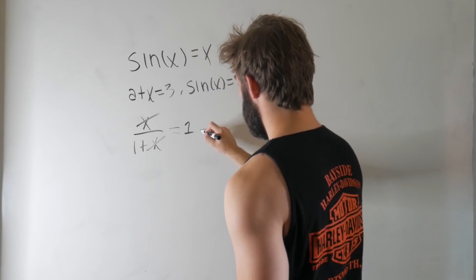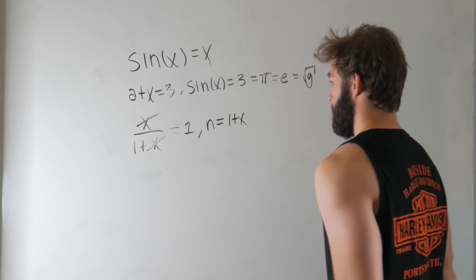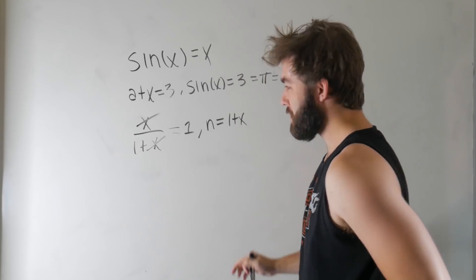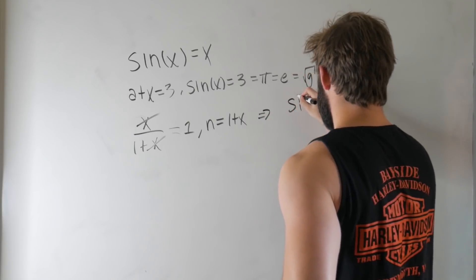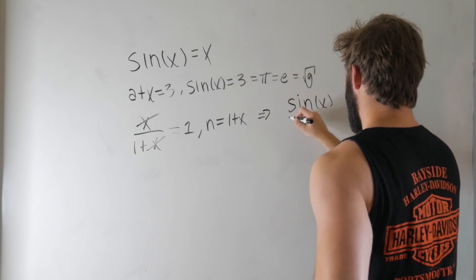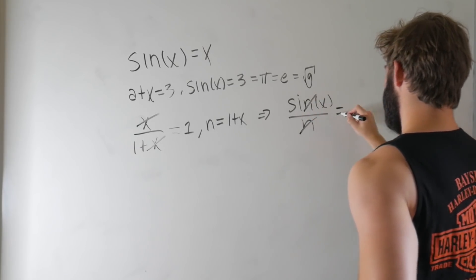But if we let N equal 1 plus X, this reminds me of something that I saw on Facebook because then X is sine of X. So this comes out to sine of X over N. Those N's cancel now, which gives us 6.